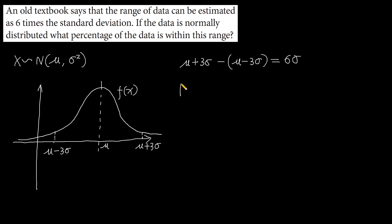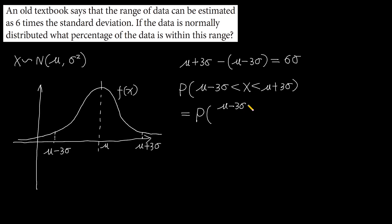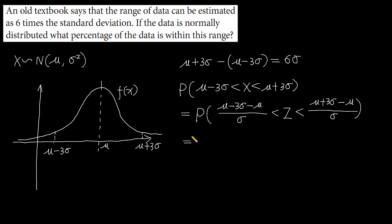In fact, this question asks for the probability that the random variable is greater than mu minus three times the standard deviation and less than mu plus three times the standard deviation. Standardizing, this equals the probability that minus three is less than z and z is less than three.